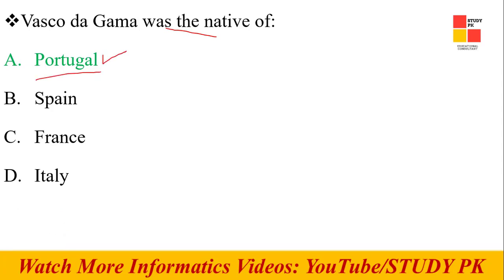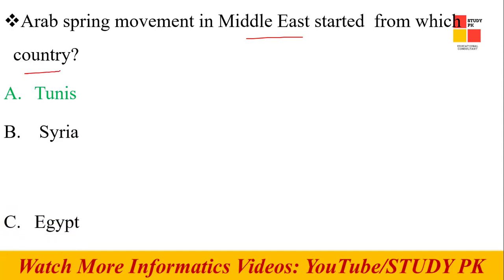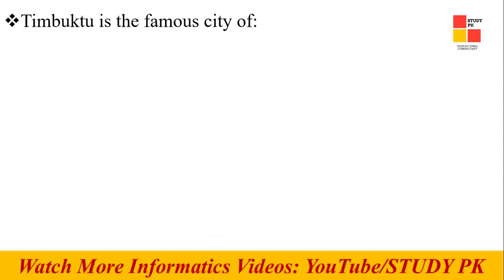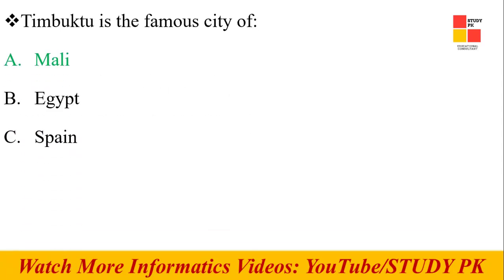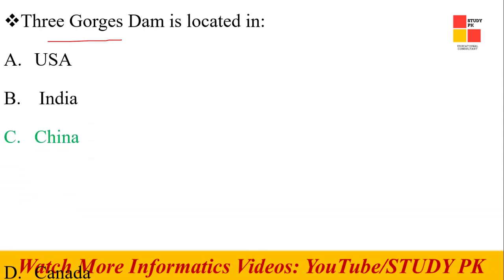Next question: The Arab Spring movement in the Middle East started from which country? Tunisia is the right option. Next question: Timbuktu is a famous city of Mali. Yes, the right option is Mali. Next question: The Three Gorges Dam is located in China.